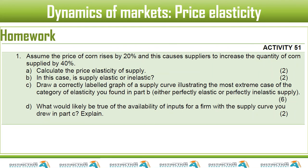For homework: assume the price of corn rises by 20%, causing suppliers to increase the quantity supplied by 40%. Calculate the price elasticity of supply — remember, percentage change in quantity supplied goes on top and percentage change in price goes on the bottom. Then determine whether supply is elastic or inelastic based on your answer.